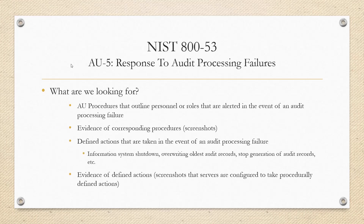So let's jump into what we're looking for. What we really want to see right off the bat is some AU procedures that are going to outline those specific personnel or roles that are alerted in the event of an audit processing failure. Whether that be a distribution list or if there's a tool that does it where each individual is getting emails based on a given role within that tool, we just want to make sure that those roles and responsibilities are maintained within your AU procedures and updated regularly. So if someone leaves the organization or if there has been a change in roles and responsibilities, anything like that should be notated.